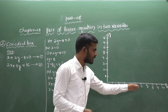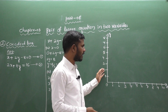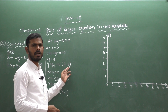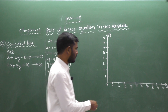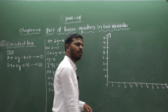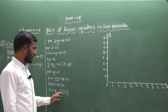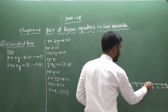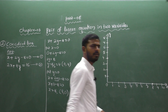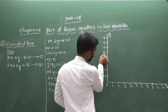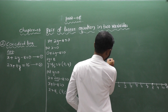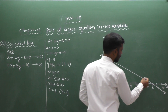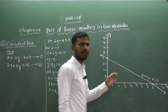Now we plot both sets on the graph. This is the x-axis and this is the y-axis. For (0, 4): 0 is the x-value (abscissa) and 4 is the y-value (ordinate). For (8, 0): abscissa is 8, ordinate is 0. Join the two points to get the first equation line, x plus 2y minus 8 equal to 0. A pair of linear equations in two variables always gives a straight line.